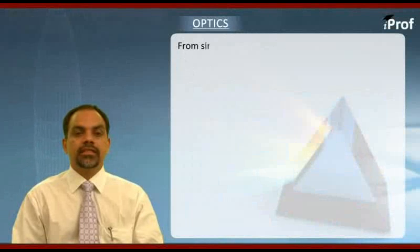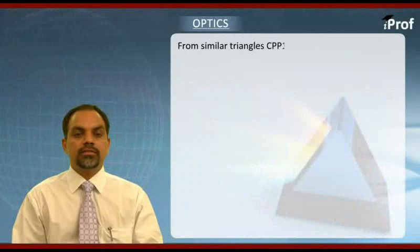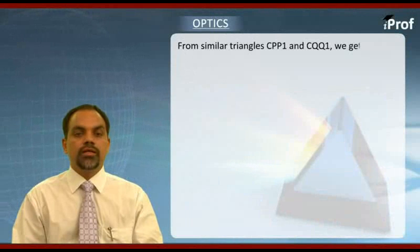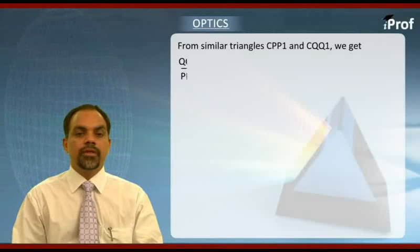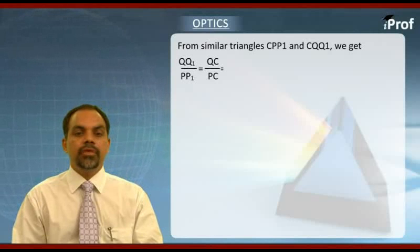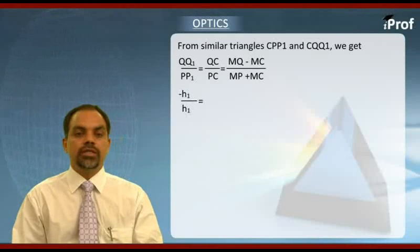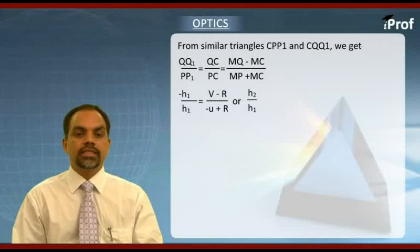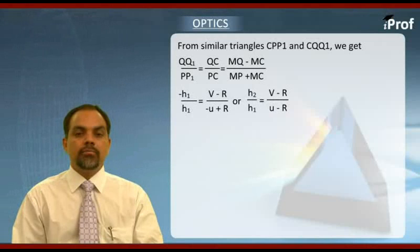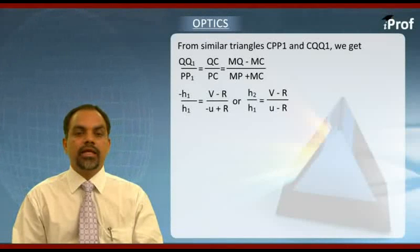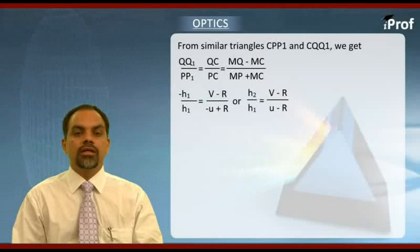From similar triangles Cpp1 and Cqq1, we get a very simple relationship: qq1 over pp1 is equal to qc over pc, which I can write it as mq minus mc over mp plus pc. Making substitution with proper sign convention, we get minus h2 over h1 is equal to v minus r divided by minus u plus r. This can be rearranged and we get h2 over h1 is equal to v minus r over u minus r.